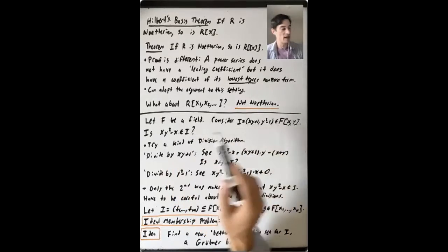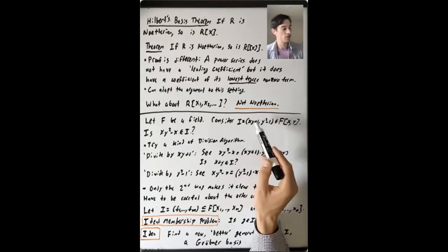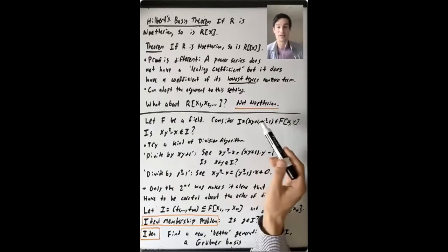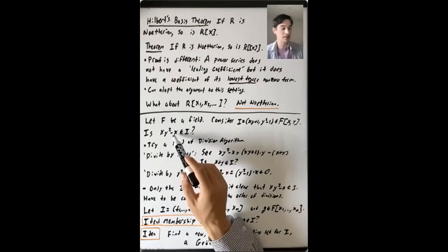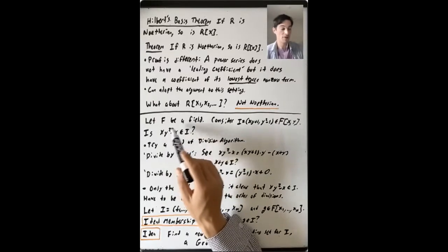If I want to write this polynomial, X, Y squared minus X, as this first polynomial, X, Y plus one, plus something, some kind of remainder, what I would do is figure out, what do I have to multiply this polynomial by to cancel out the main term of this polynomial,